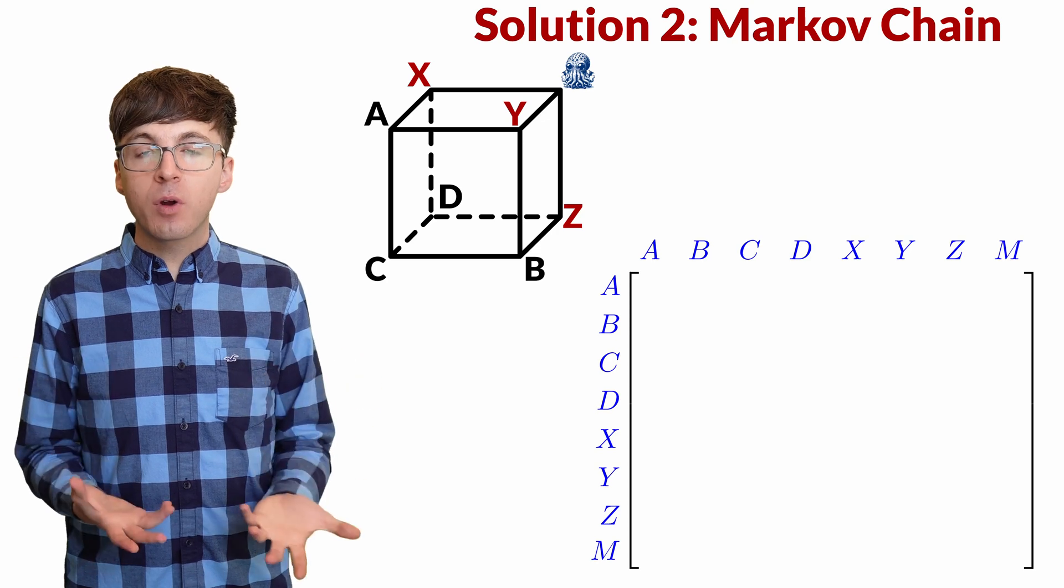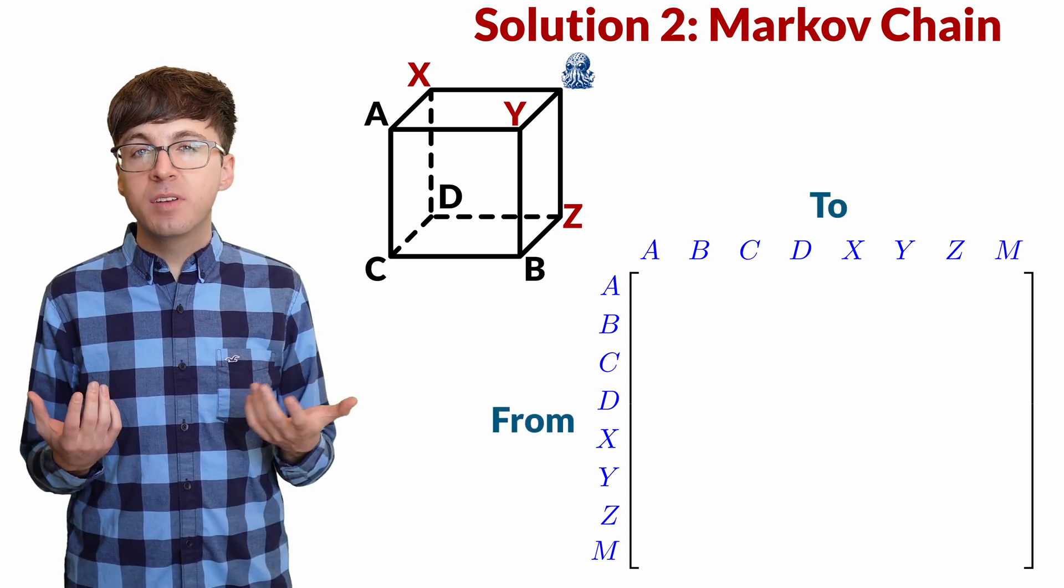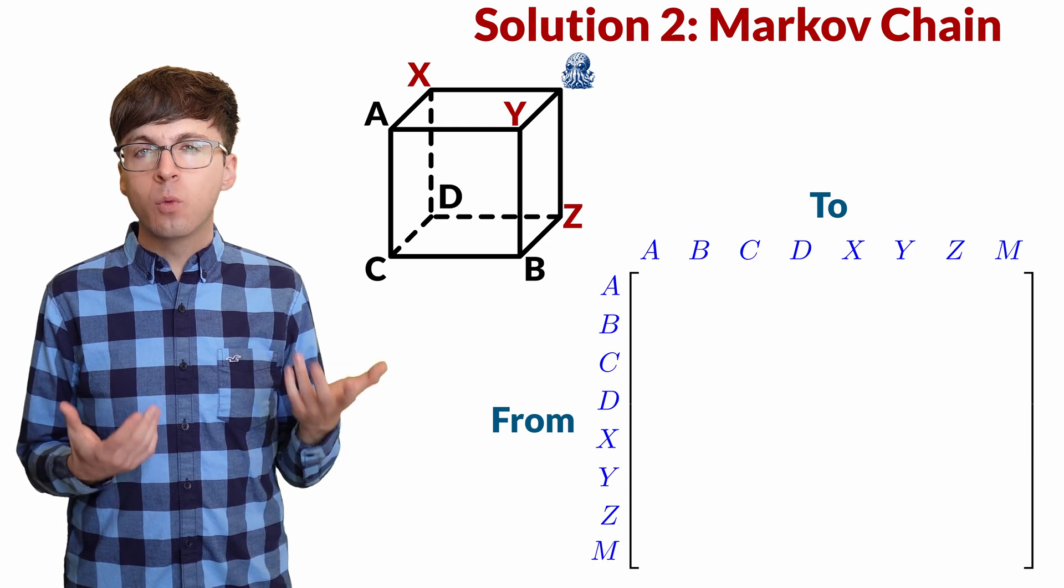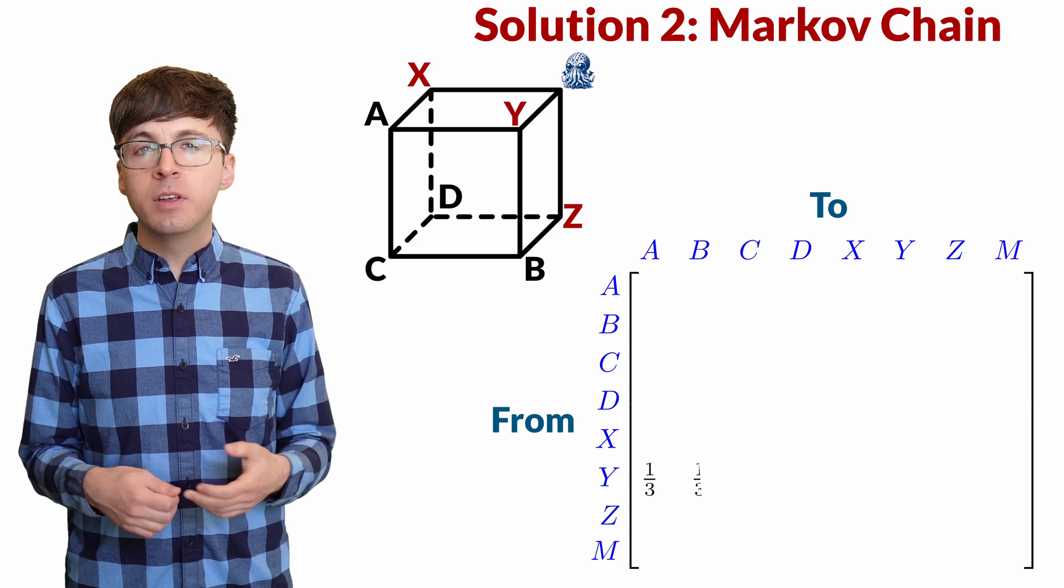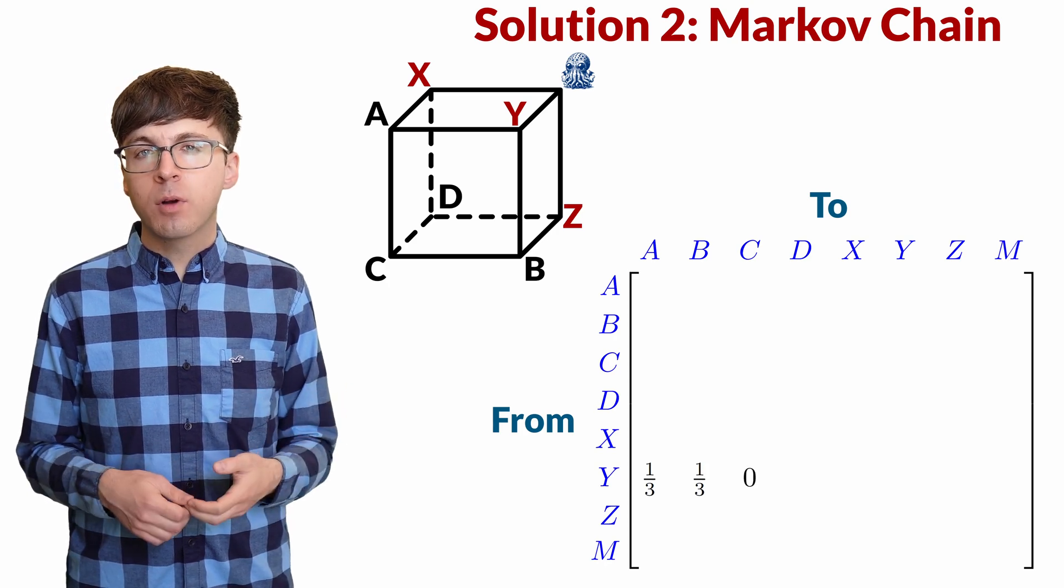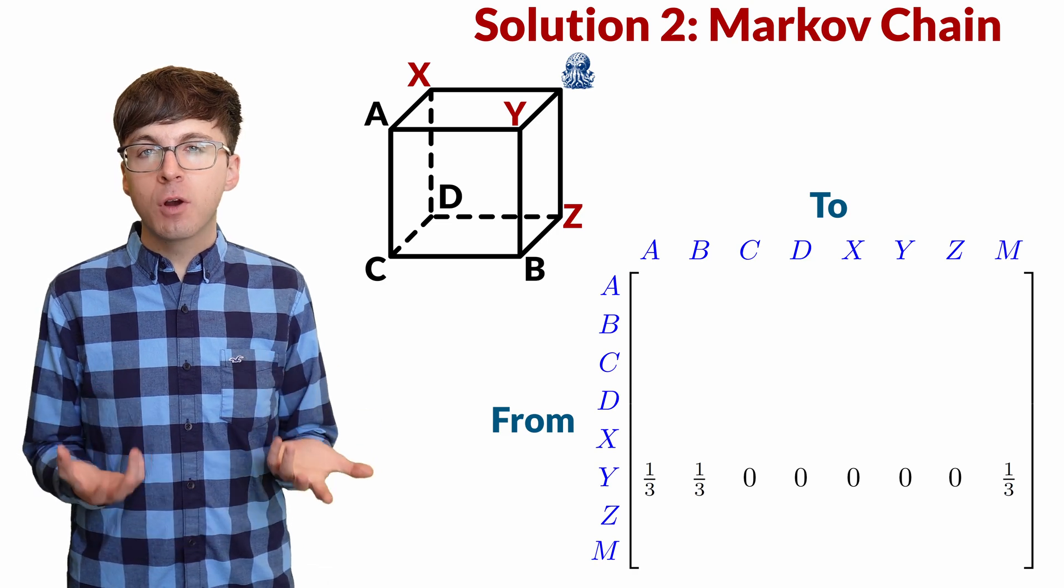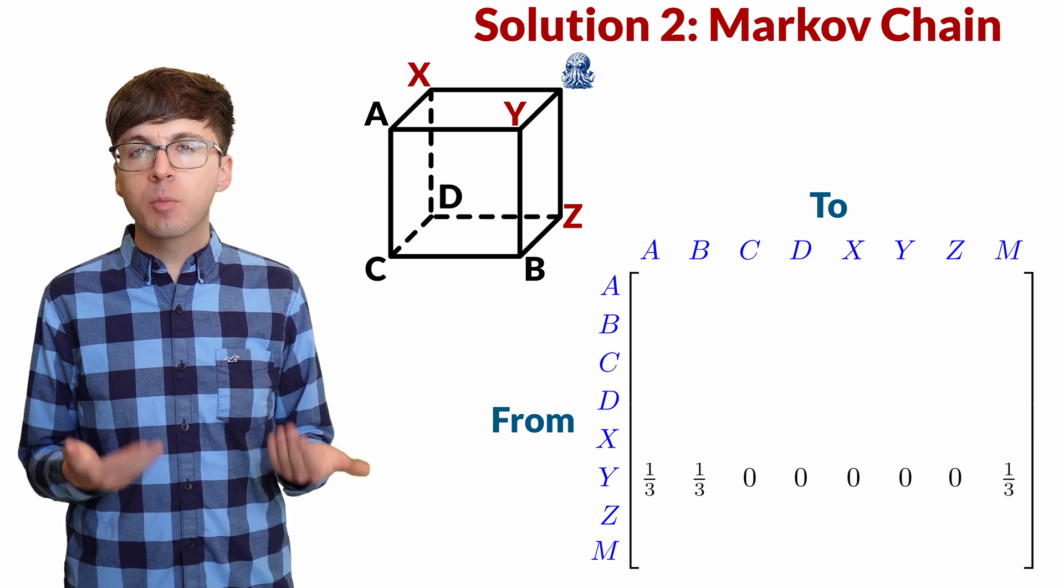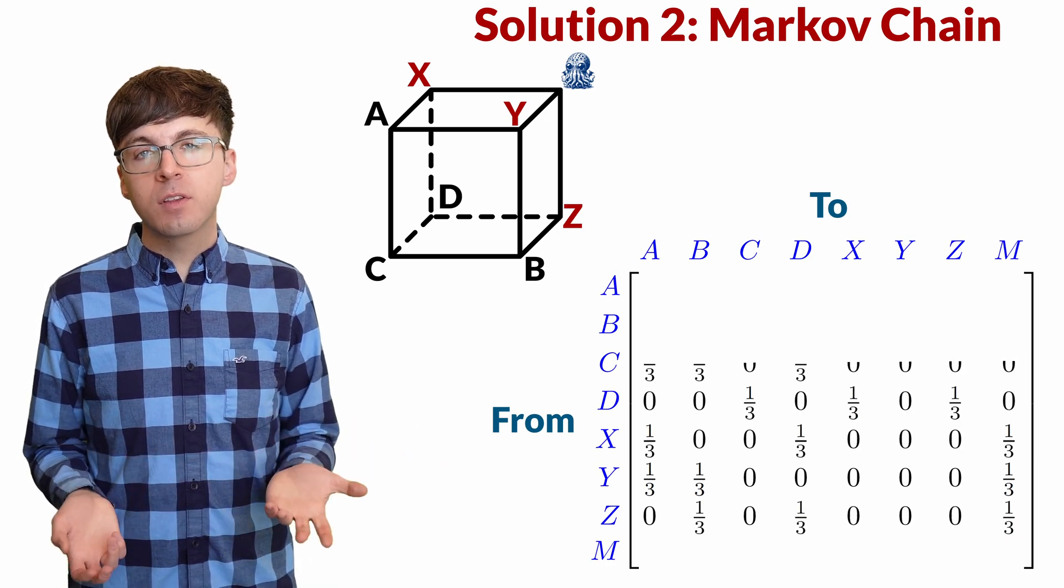We can solve problems like this by creating a transition matrix. This matrix gives us the probabilities of going from one vertex to another. For example, if the potato is currently at y, there's a one-third probability of throwing the potato to A, a one-third probability of throwing to B, and a one-third probability that the potato goes to the monster. The entries in each row sum to one, since we're adding up the probabilities of where the potato goes next. We can fill in the rest of the matrix similarly.